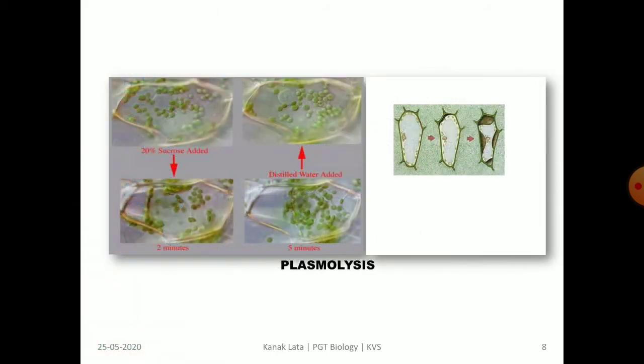Here you may observe plasmolysis, which can be easily observed under a microscope. When you place an onion peel in 20% sucrose solution or salt solution, after 2 to 5 minutes the cell will become plasmolyzed, and can again be de-plasmolyzed by putting the plasmolyzed cells in distilled water.